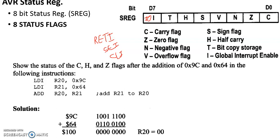Once an interrupt is being served, the entire interrupt system must be disabled until the present interrupt service subroutine is completed.